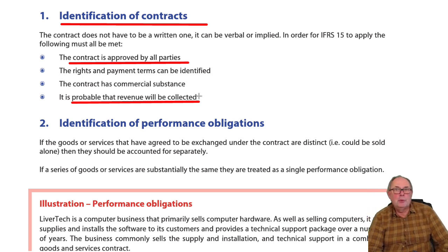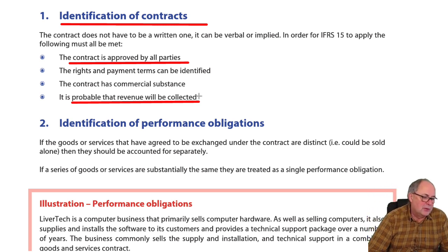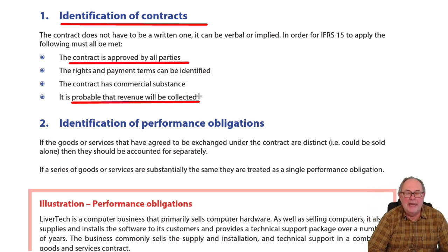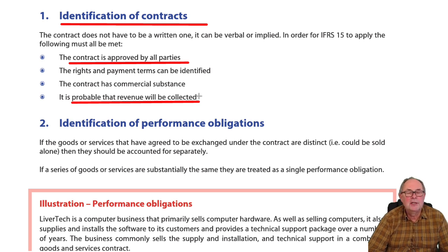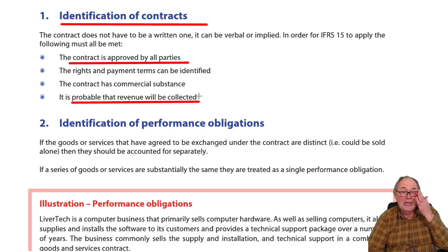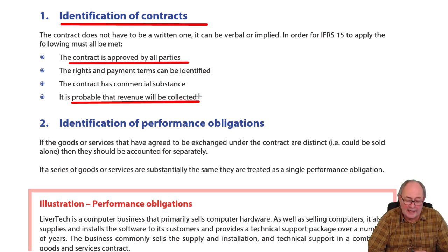You might say that you wouldn't enter a contract if you wouldn't probably get paid — I know, I wouldn't either. But if the question says they probably won't get paid, effectively say: if they probably won't get paid, this is not a contract. At the end of the day, it's like some kind of gift. So step one is: identify the contract.